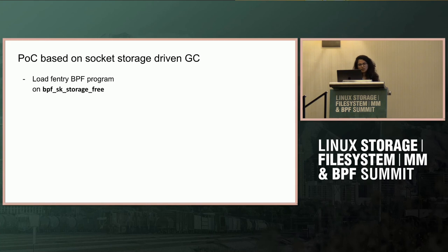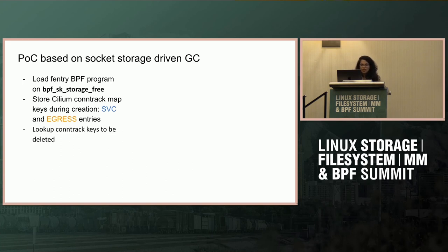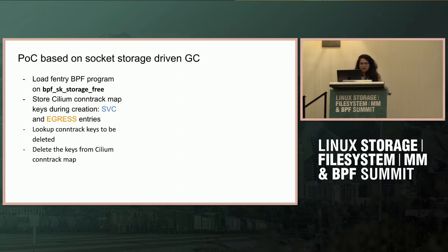For the POC, I created an fentry BPF program on the BPF SK storage free helper. When Cilium creates conntrack entries, we cache the entry keys — the service and egress entry keys — in socket storage. When the fentry program executes as a socket goes away, we look up in the storage cache and delete the entries from the conntrack map.